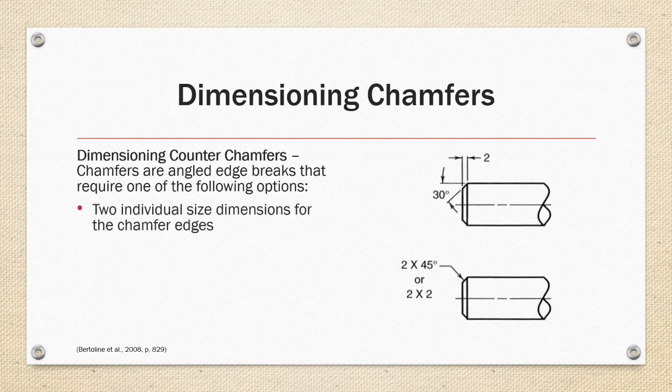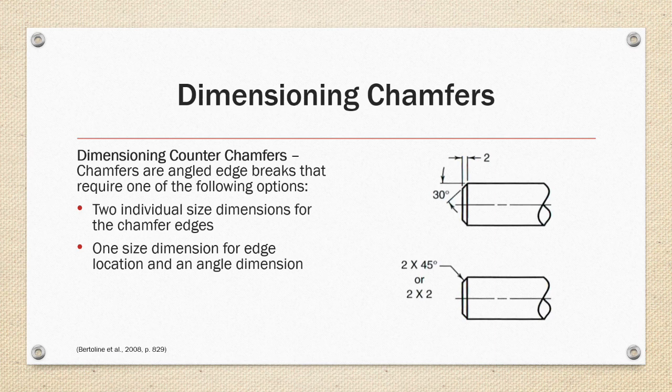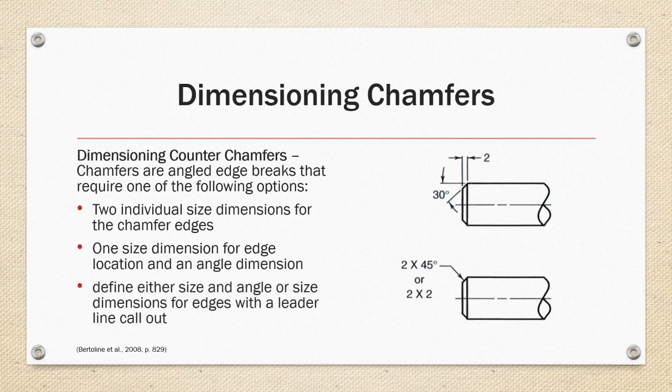Two individual size dimensions for the chamfer edges or one size dimension for the edge location and an angle dimension as shown in the first example on the right or define either the size and angle or size dimensions for edges with a leader line callout as shown in the second image on the right. Please note the example of the internal chamfer in the textbook is not necessarily incorrect but would be typically classified as a counter-sink rather than a chamfer.